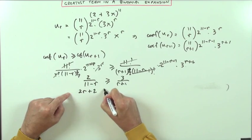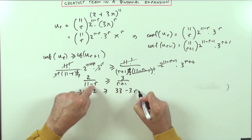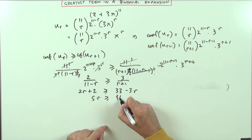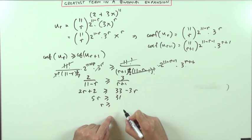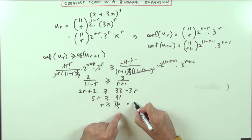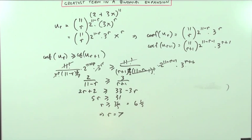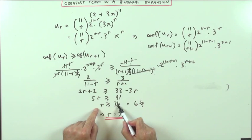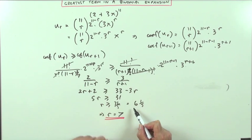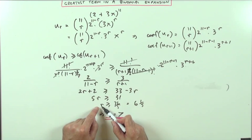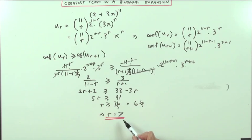Cross-multiplying: 2(r+1) ≥ 3(11-r), so 2r + 2 ≥ 33 - 3r. Rearranging: 5r ≥ 31, so r ≥ 31/5 = 6 and one-fifth. Since this isn't a whole number, there's no equality - meaning there's one single greatest term. r must equal 7. If it had come out to exactly 6, that would have meant the sixth and seventh terms were equal, but since r must exceed 6.2, r equals 7.